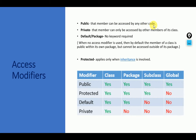In the public access modifier, the data member can be used by any other code. It means if the class or the data member is public, then every class or every method can use that data member. This is the facility of the public access modifier — the data member can be accessed by another code or another class.